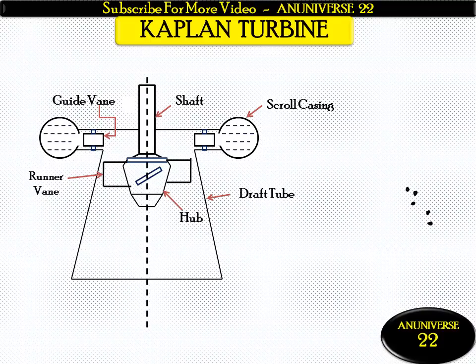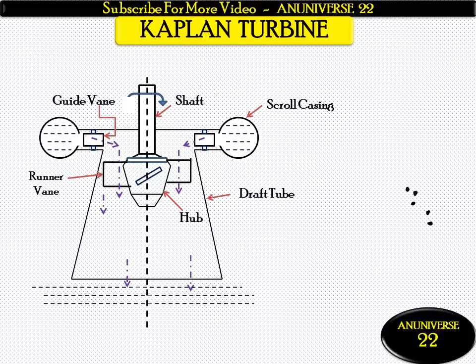Water starts from the scroll casing and passes through the guide vanes. The water discharged is parallel to the axis of the shaft. As the water strikes on these vanes, the runner starts to rotate and it rotates the shaft which is coupled with it. Finally, the water is discharged through the draft tube towards the tail race.